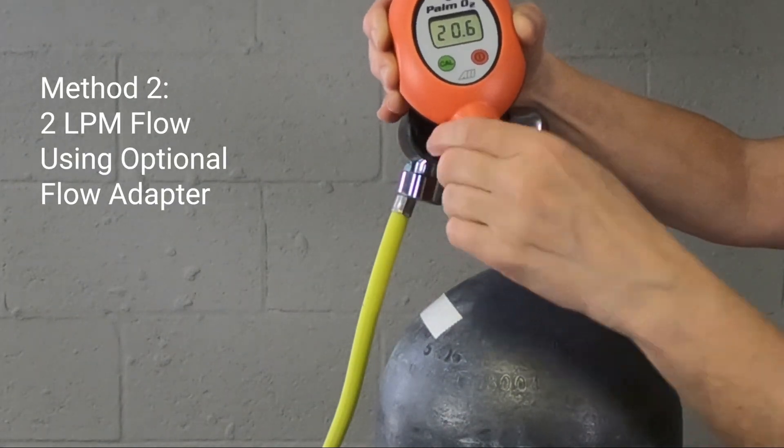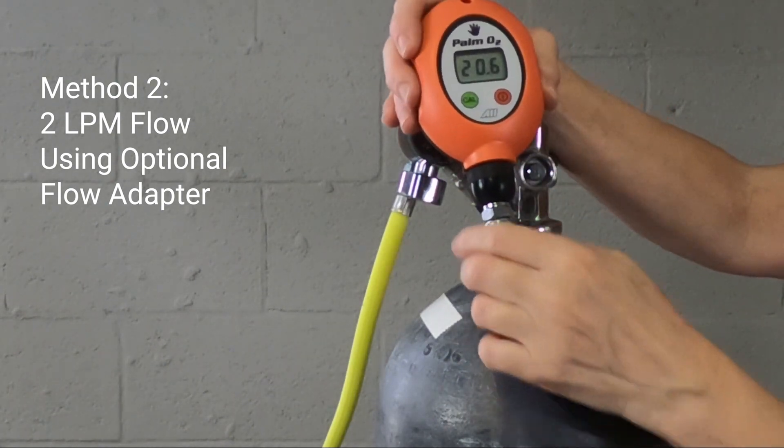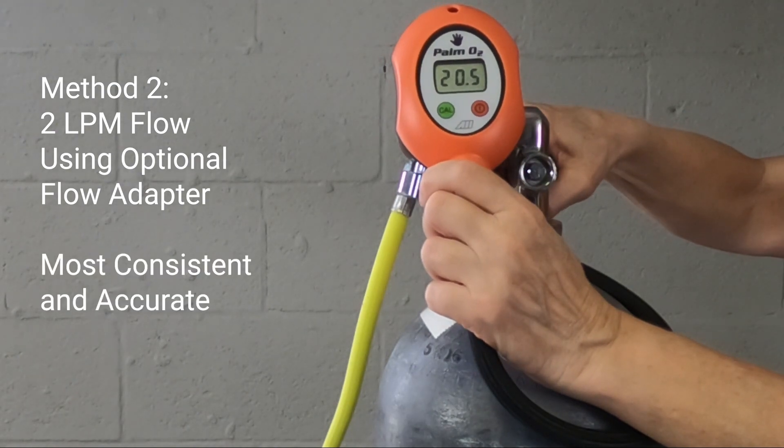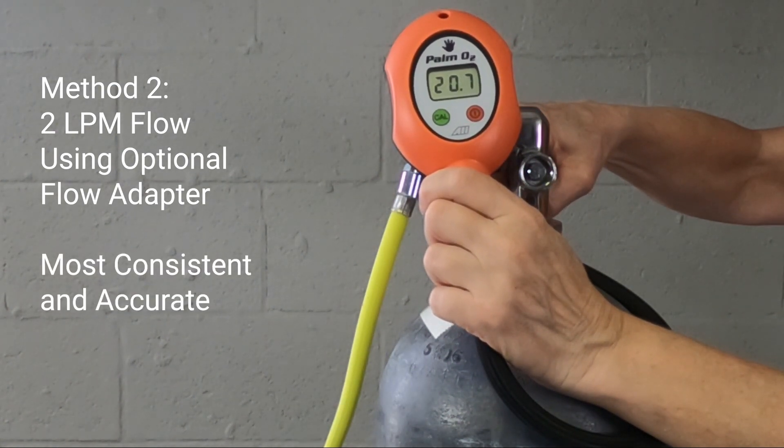The second method is analyzing with a precise 2 liter per minute flow of gas using the optional flow adapter. The flow adapter provides the most consistent and accurate analysis.